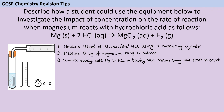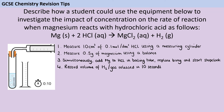Then we add the magnesium to the acid, replace the bung so the gas syringe is connected, and start the stop clock at the same time. It's really important that you mention writing down how much gas has been released in a set amount of time. The exact time interval — 10 seconds or 20 seconds — doesn't matter; we just need to make it really clear that we're timing and that it's the same amount of time each time we repeat the investigation.